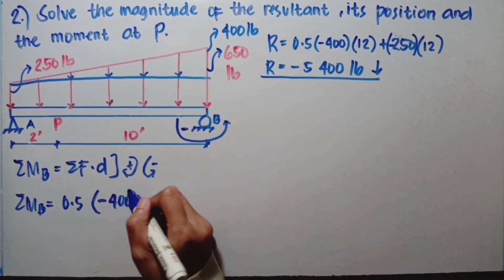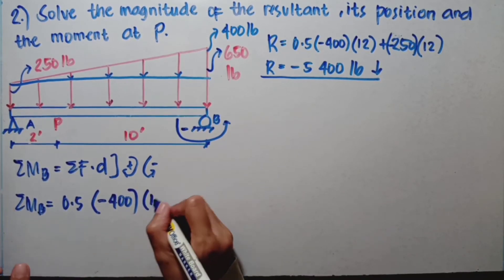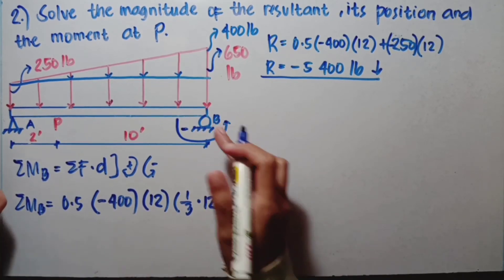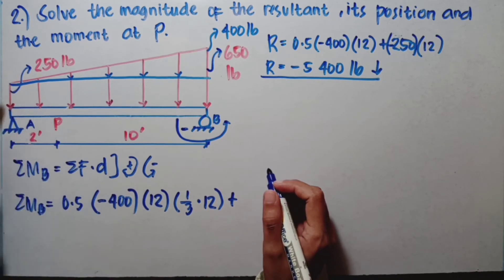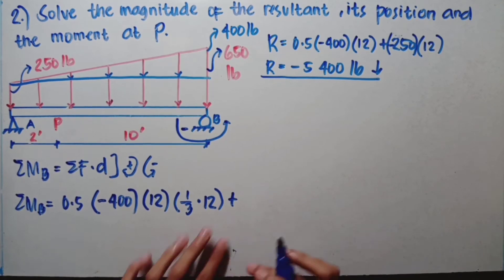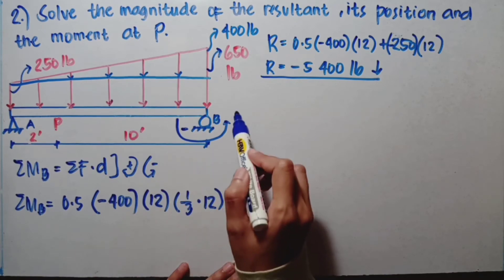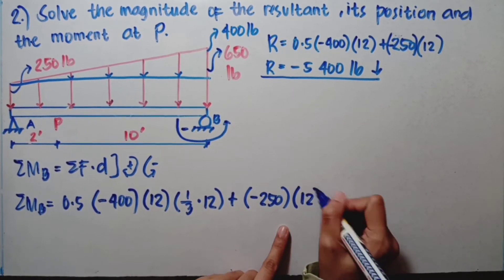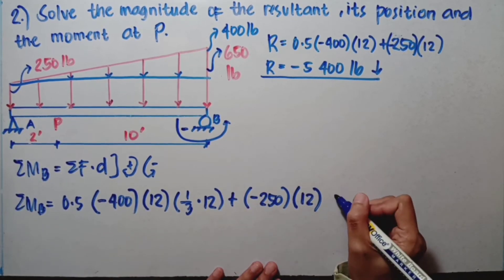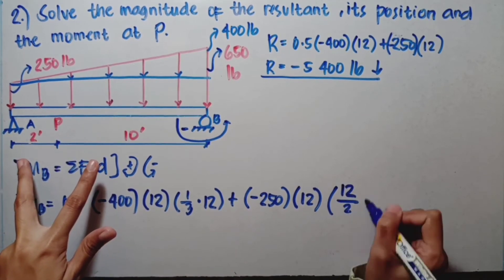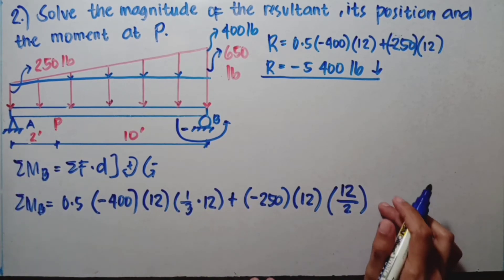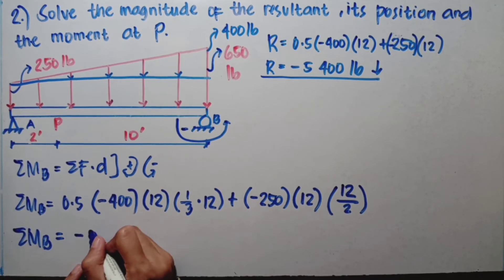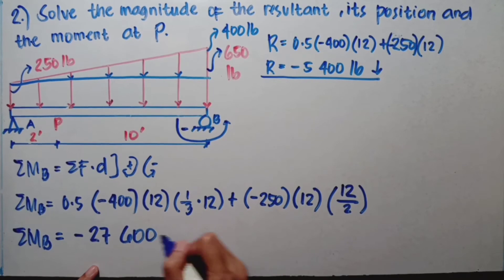The negative 400-pound triangular force times its length of 12 inches, times its moment arm of one-third of 12. Then for the uniform load: negative 250 — since its rotation is also counterclockwise — times its length of 12 inches, times its moment arm of 12 divided by 2. When we calculate summation of moment at B, the answer is negative 27,600 pound-inches.